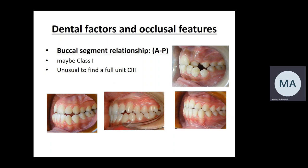In buccal segment relationship, there is variety — from class one molar relationship to half unit or full unit class three. The molar relationship can also be affected by local factors: early loss of an upper E causes the upper six to shift mesially, making class three less severe; conversely, early loss of a lower E shifts the lower six mesially, increasing the severity of the buccal segment relationship. So severity doesn't only reflect skeletal discrepancy — local factors also play a role.